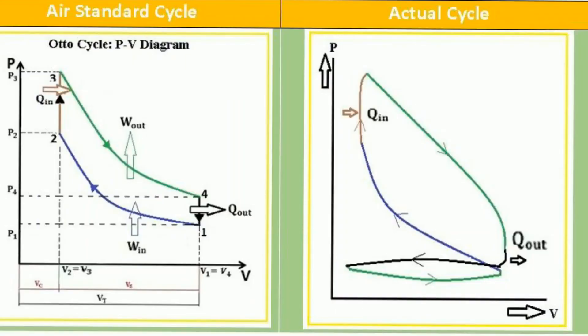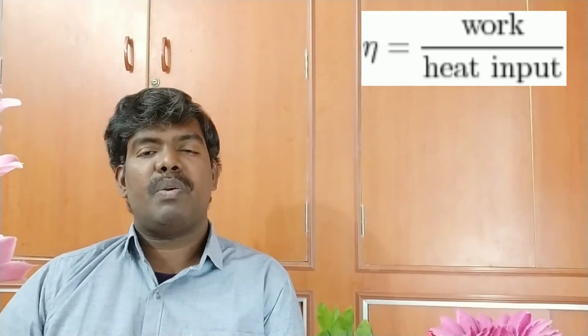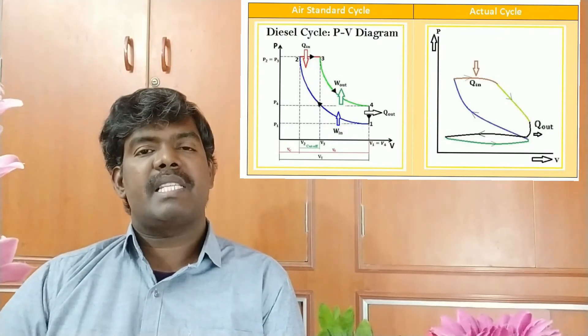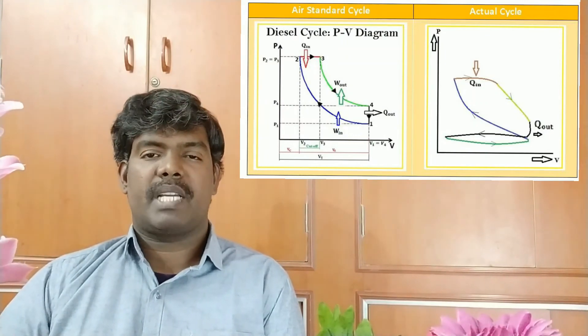In the actual cycle PV diagram, there are no sharp corners — everything forms curvatures and fillet points. Two sets of curves are formed. The area between the top curve and the bottom curve represents the net work output, and there is also a loss of work. So the net work is less compared to the standard cycle, which is why overall efficiency is reduced. The same comparison applies to the diesel cycle PV diagram.